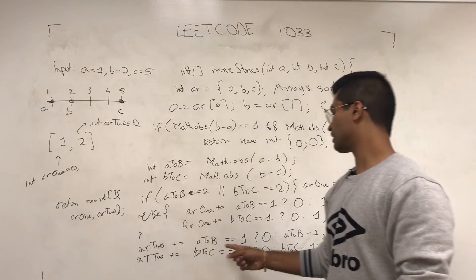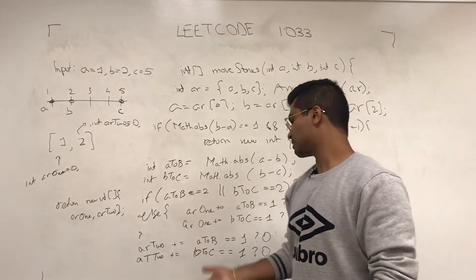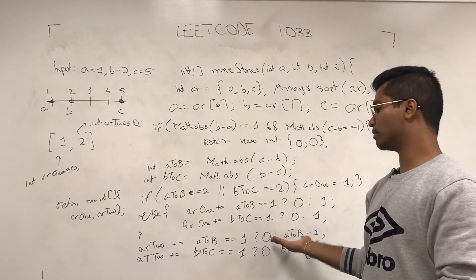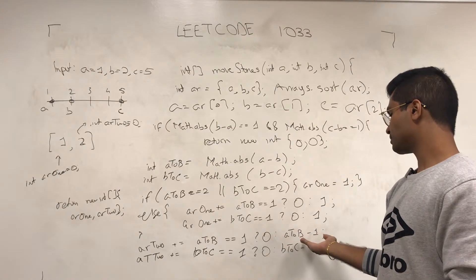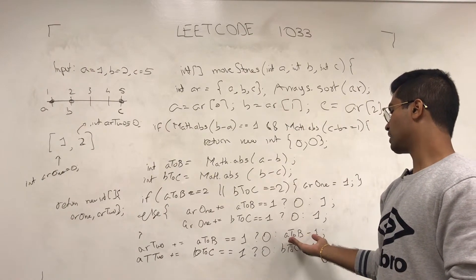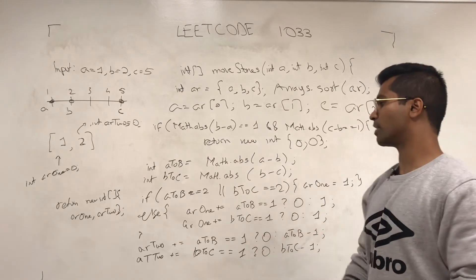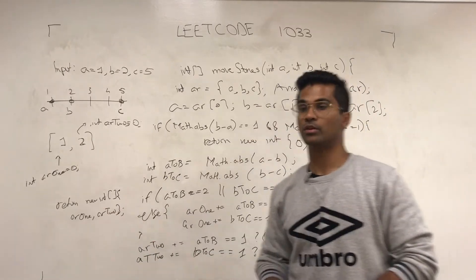And with the AR2, we see, okay, is it 1 away? If it is, we can't really move it. We're not supposed to move it. If it is very far away, we just move it one at a time and that's just going to be the maximum. We found those two and we return it.